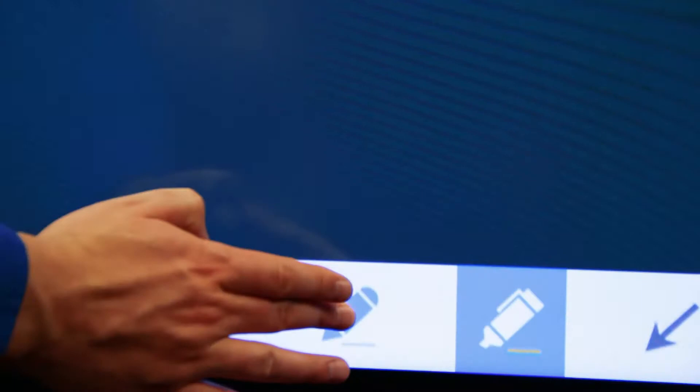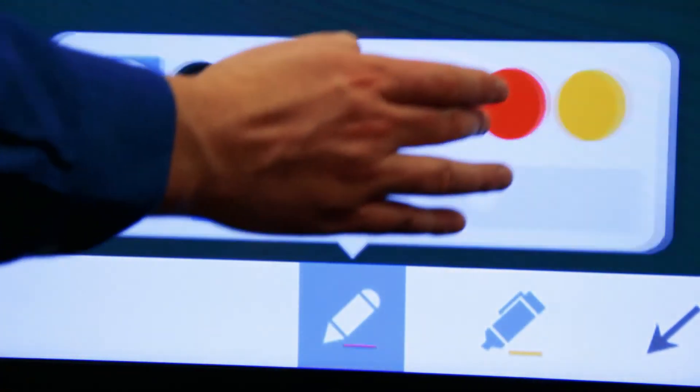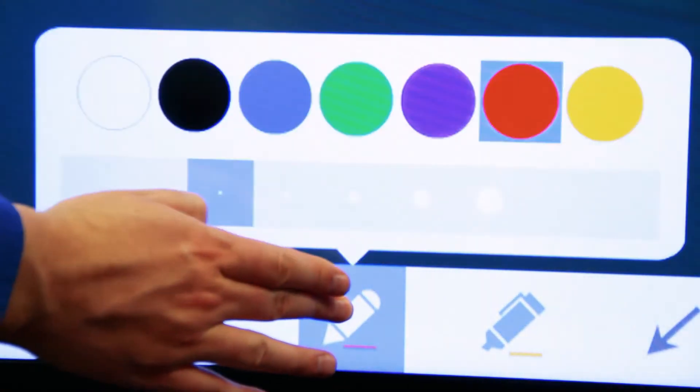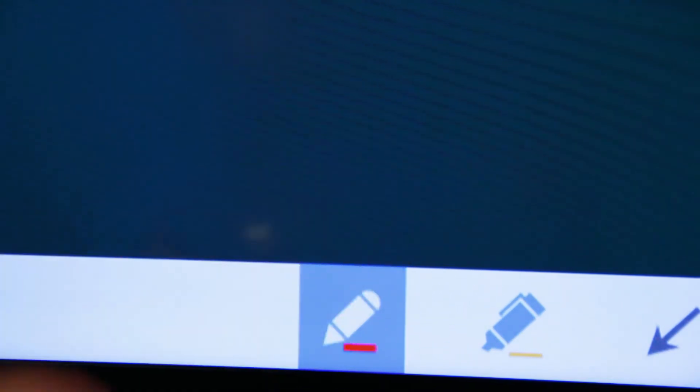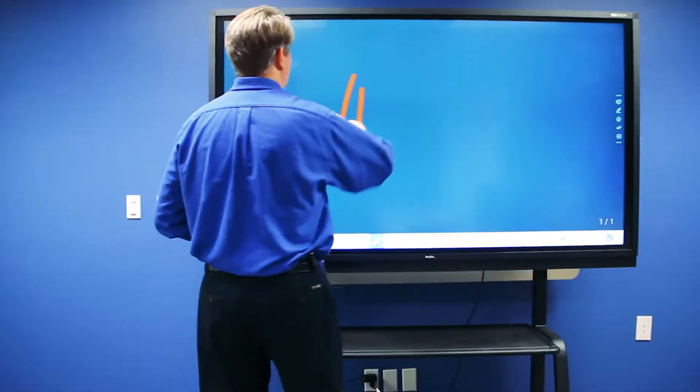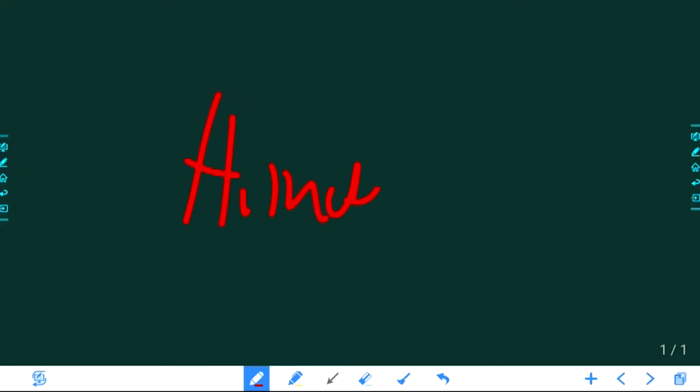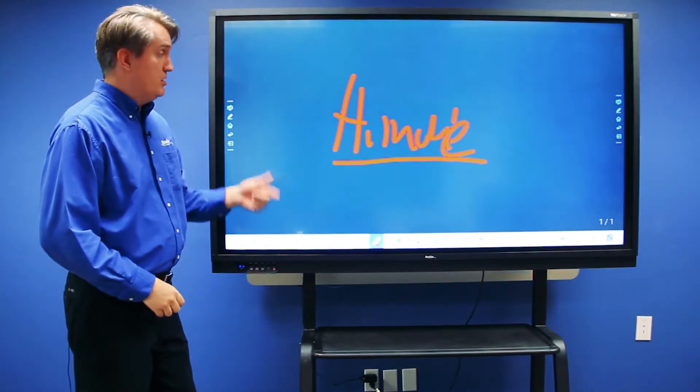Do a touch and hold on the writing utensil you wish to use. You can choose your color and your thickness. Once you've made your choice, then you can begin annotating directly on the screen.